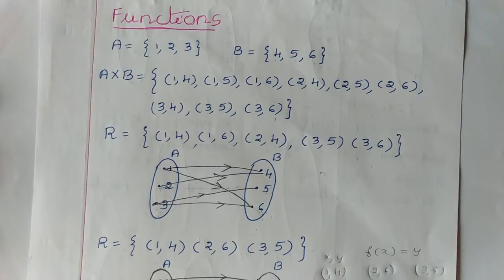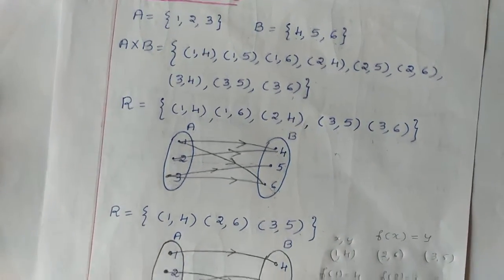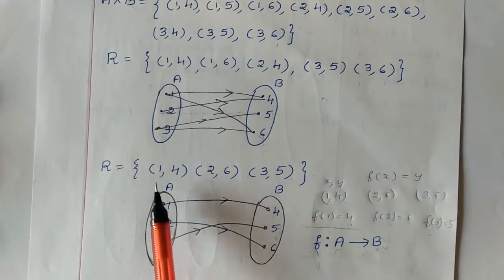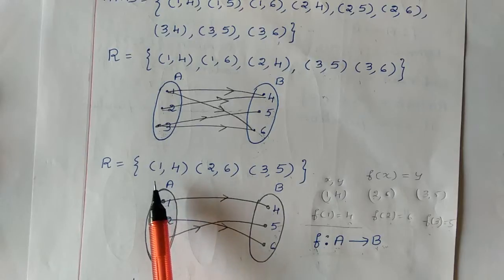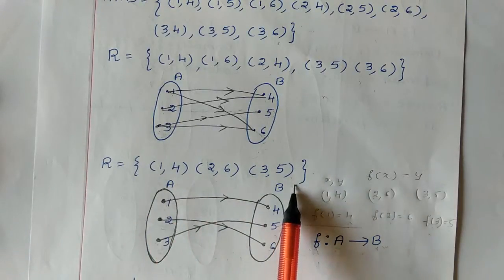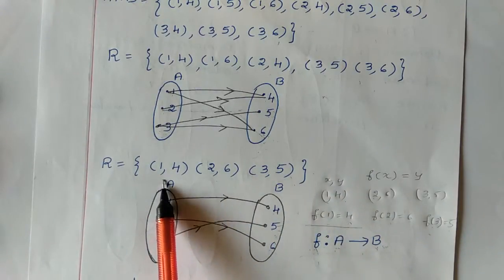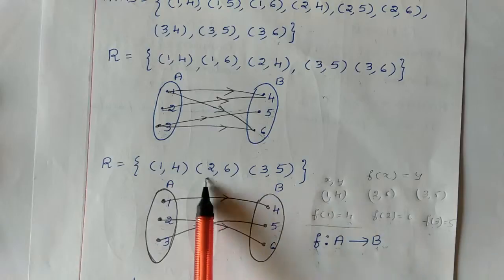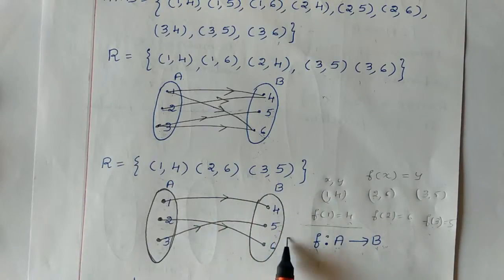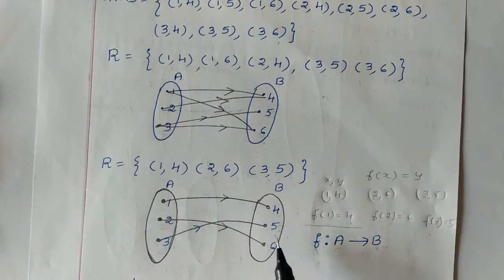In the same way, the second relation also has 3 ordered pairs: (1,4), (2,6), (3,5). So 1 is mapping to 4, 2 is mapping to 6, and 3 is mapping to 5. This is a mapping diagram or arrow diagram.